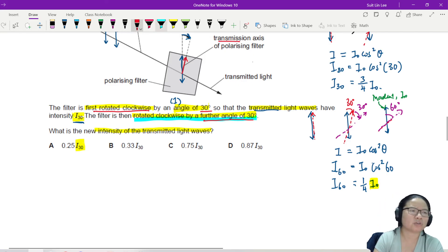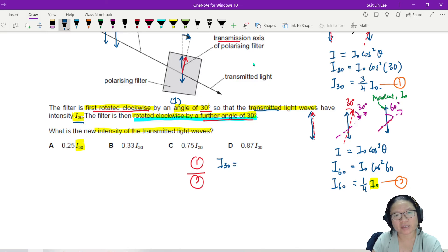The easiest way to solve the substitution is actually to divide the equation. Because the I naught can cancel out. Or you substitute also can. Whichever is faster for you, I guess. So I'm going to take equation 1 divided by equation 2. I 30 is equal to I naught times 3 over 4, 3 over 4 I naught, divided by I 60, 1 over 4 I naught. So the I naught cancels and the 4 cancels.